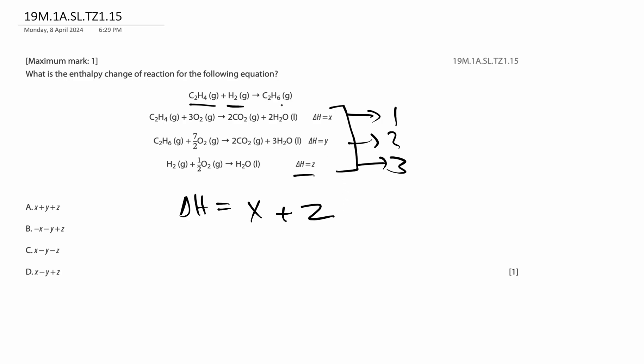And then finally, we have to have C2H6 on the product side. Which has C2H6 of the three equations? Equation 2. But C2H6 is on the reactant side. It needs to be on the product side. So in order to get it to the product side and to flip the equation, I need to multiply its enthalpy by negative 1. So instead of H is equal to Y, it will be equal to negative Y. That's all I need to do.